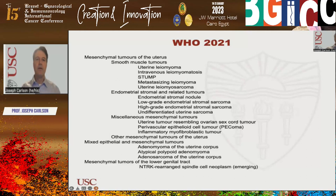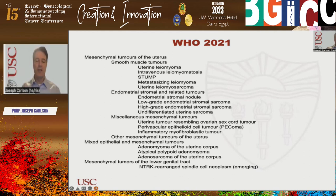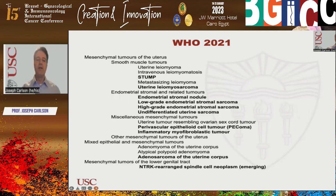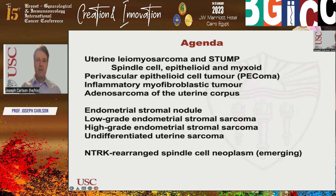The WHO has a long list of mesenchymal tumors of the uterus, as well as mixed epithelial mesenchymal tumors and mesenchymal tumors of the lower genital tract. I'm going to focus on the most relevant lesions. We'll start with smooth muscle tumors, move into other uterine tumors, then focus on endometrial tumors, and finally end with an emerging tumor: the NTRK-rearranged spindle cell neoplasm.